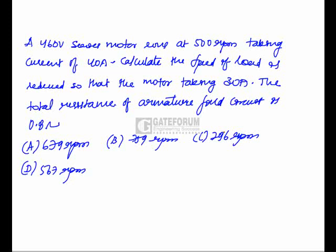A 460 volt series motor runs at 500 rpm taking current of 40 amperes. Calculate the speed if load is reduced so that the motor takes 30 amperes. The total resistance of armature field circuit is 0.8 ohms.